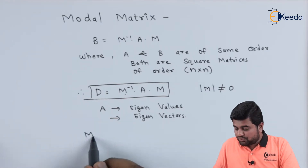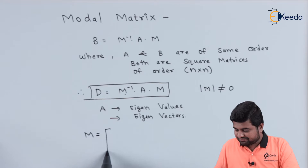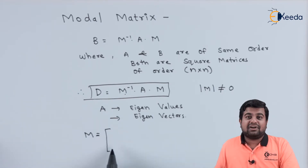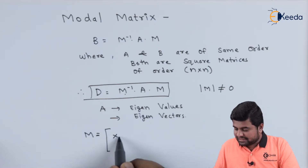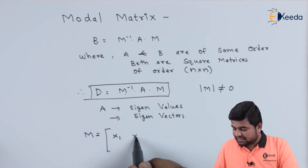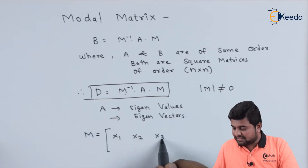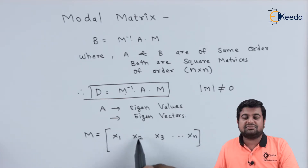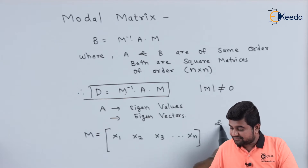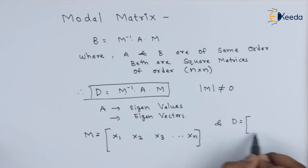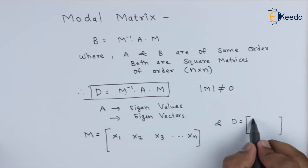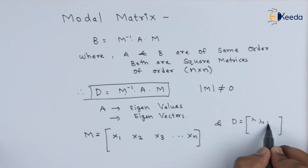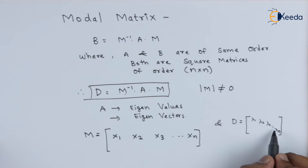In order to construct matrix M, we put all the eigenvectors column-wise: x1 in the first column, x2 in the second column, x3 in the third column, and so on up to xn. The diagonal matrix D is nothing but all the eigenvalues lambda 1, lambda 2, lambda 3 up to lambda n placed in diagonal element form, with all other elements equal to zero.